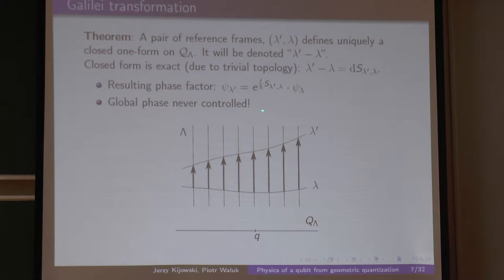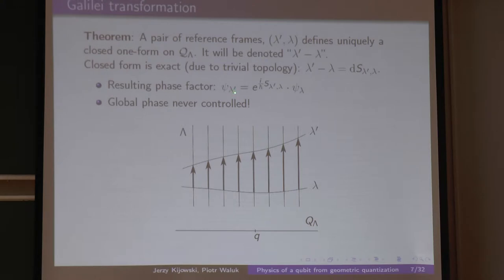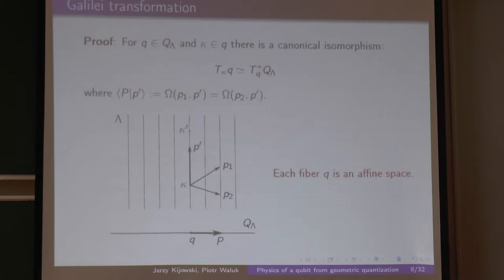There is a mathematical theorem: whenever I have a Lagrangian foliation and two reference frames — Lagrangian submanifolds which are transversal — this situation uniquely defines a closed one-form on the cotangent space. The phase factor is nothing but a primitive function of that form. Again, the global phase is never controlled. This phase factor, used when passing from one reference to another, is just the geometric phase, uniquely defined by the foliation and the two reference frames.